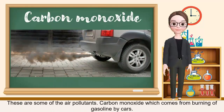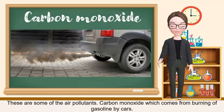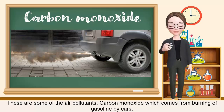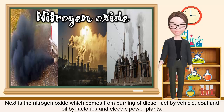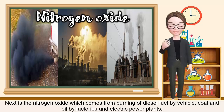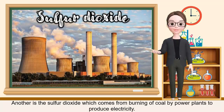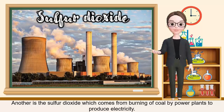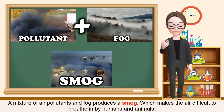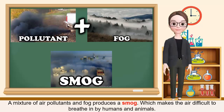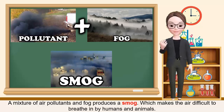These are some of the air pollutants. Carbon monoxide, which comes from burning of gasoline by cars. Next is nitrogen oxide, which comes from burning of diesel fuel by vehicles, coal and oil by factories and electric power plants. Another is sulfur dioxide, which comes from burning of coal by power plants to produce electricity. A mixture of air pollutants and fog produces smog, which makes the air difficult to breathe in by humans and animals.